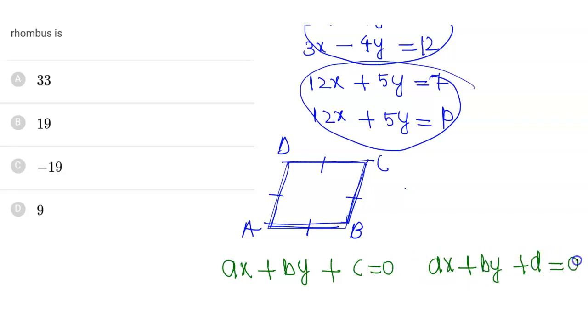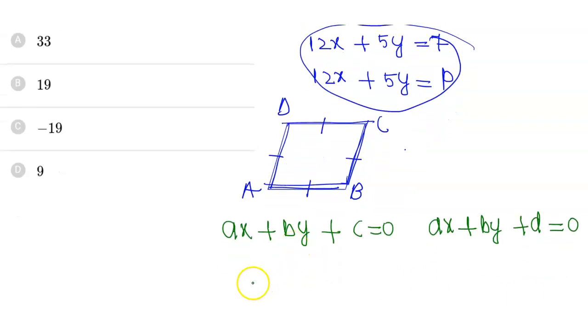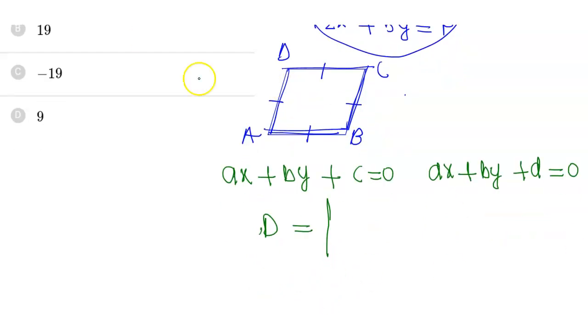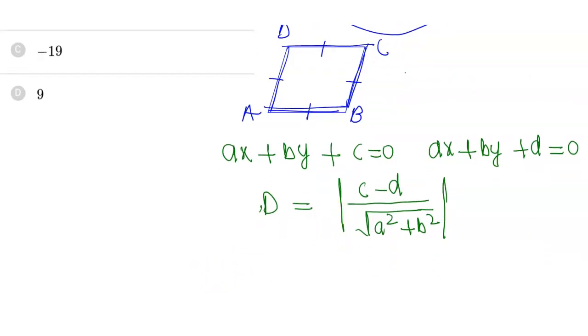The distance between two parallel lines is given by |c - d| divided by √(a² + b²). We apply this formula to both pairs of parallel lines. Since it's a rhombus, opposite sides must have equal distances.